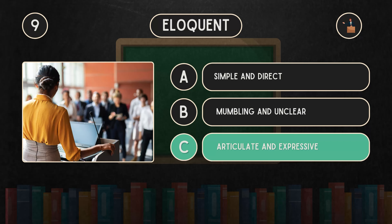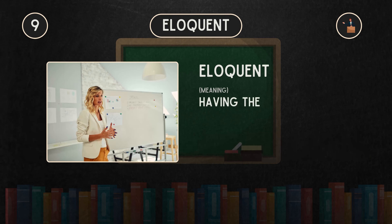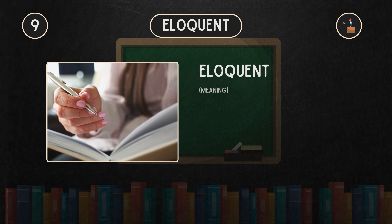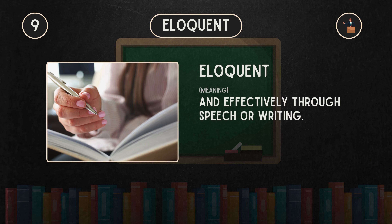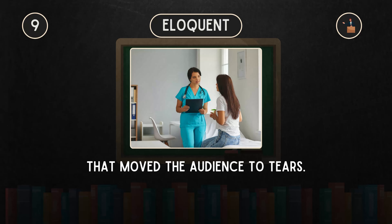C. Articulate and expressive. Eloquent means having the ability to express ideas or feelings clearly and effectively through speech or writing. For example, she delivered an eloquent speech that moved the audience to tears.